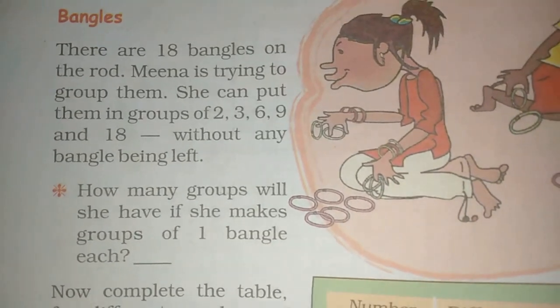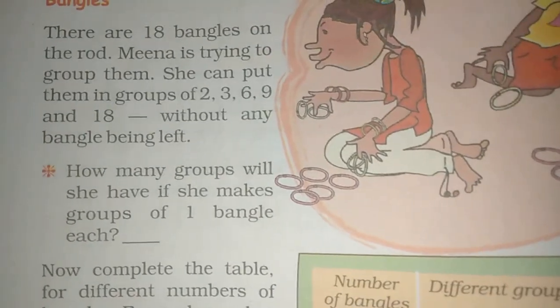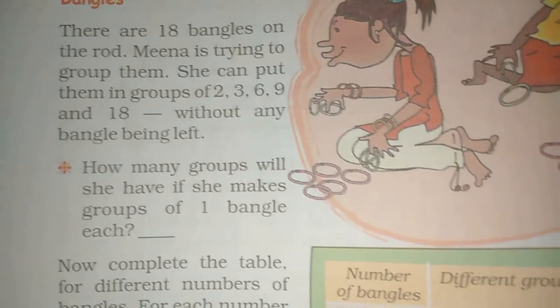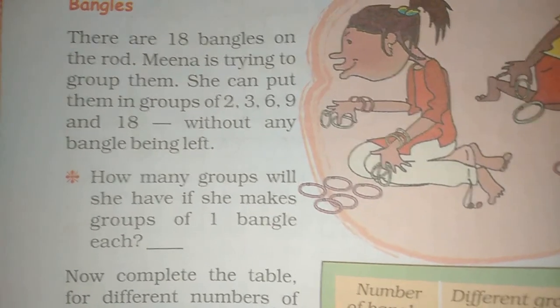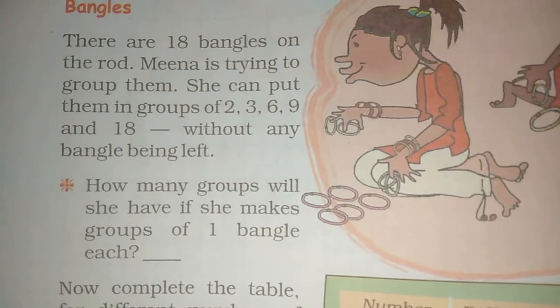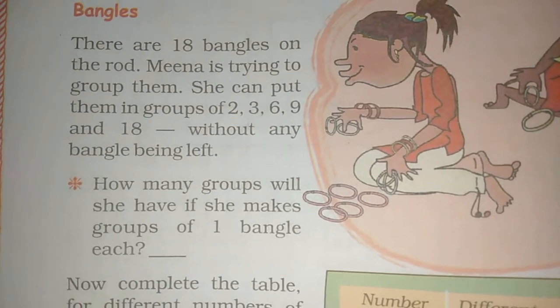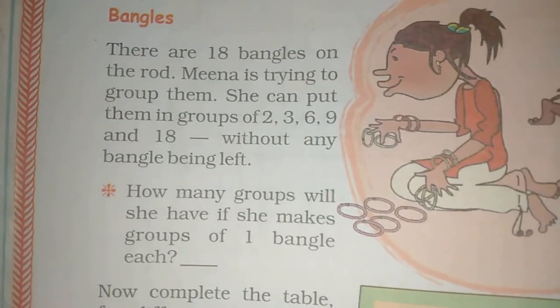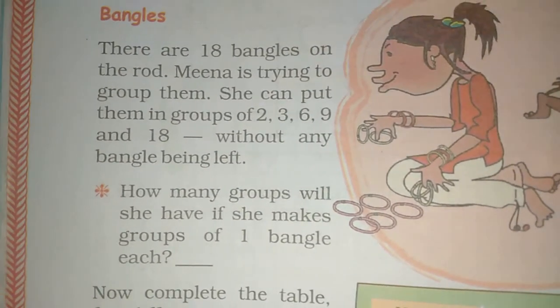How many groups will she have if she makes groups of one bangle each? If she makes one bangle each, then how many groups will she make? 18 groups - she will have to make a group of one bangle each.